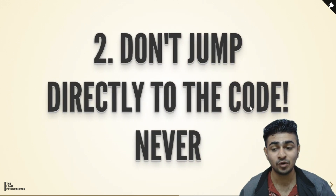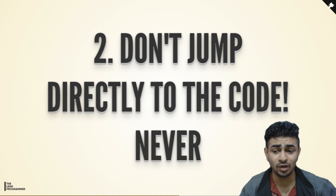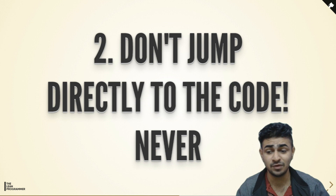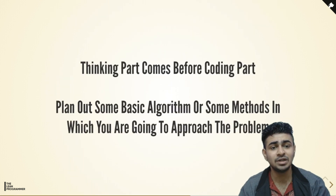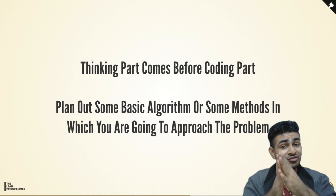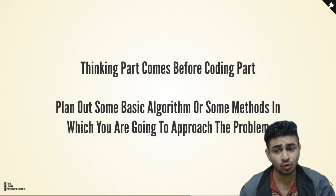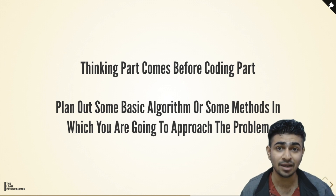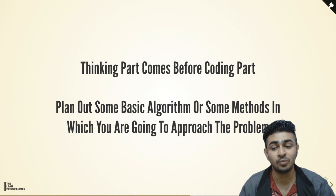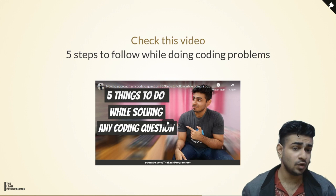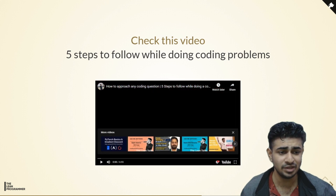The second tip is: don't directly jump onto the code. This is very important. A lot of people, whenever they are given any problem, just start writing code for it. This is a very bad habit. While it might work for simple problems, it's never going to work for difficult ones. Remember that the thinking part always comes before the coding part. You have to think properly about the input, the output, the edge cases, and the examples. Plan out a basic algorithm, see some examples, and plan the methods you are going to use to approach the problem. I've made a full video on the five things you should do while solving any coding question — do check it out on my YouTube channel.